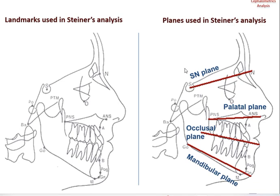Coming to the planes, there are four different planes: the SN plane, that is sella to nasion; the palatal plane, which runs from anterior nasal spine to posterior nasal spine; the occlusal plane, which bisects the occlusal surfaces of molars and premolars; and finally a line from gonion to a point between nasion and menton. These four planes are used in Steiner's analysis.